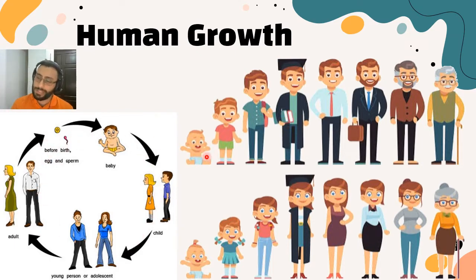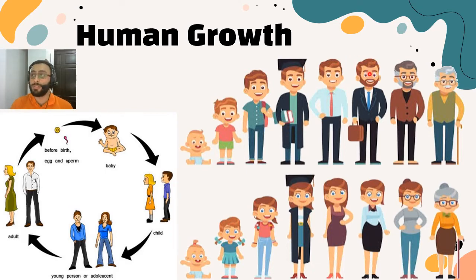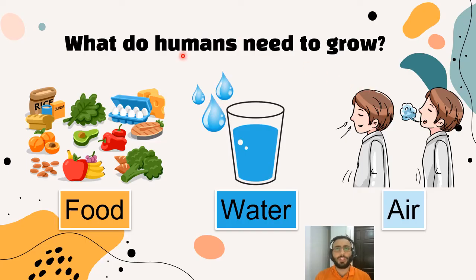This is a human life cycle. We start from a baby, become a kid, then a teenager, and then an adult. Teacher Jonas is at this stage right now, and after this I will grow into an older man. We humans grow. So, what do humans need to grow?